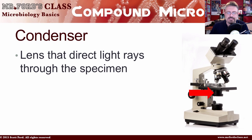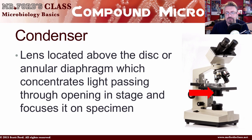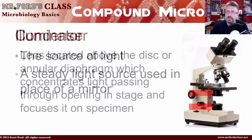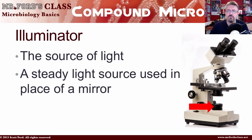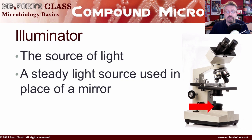The condenser is the lens that directs light through the specimen. It's located above the disc or annular diaphragm, which concentrates and focuses the light passing through the opening in the stage onto the specimen — adjusting how much light gets through. The illuminator is the source of light, usually a small bulb that projects a steady light source in place of a mirror. Most microscopes you'll encounter in college or high school have their own built-in light source.